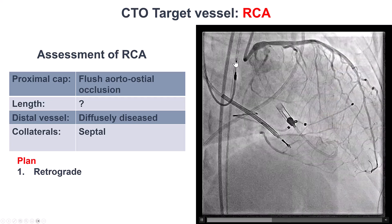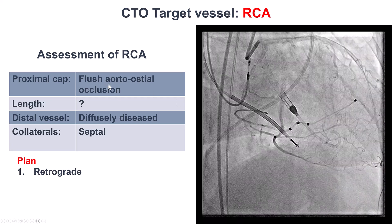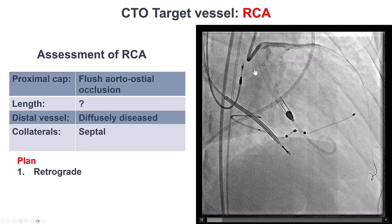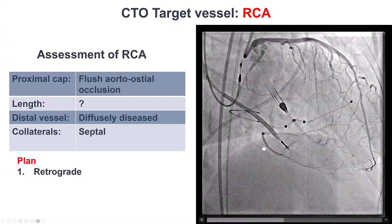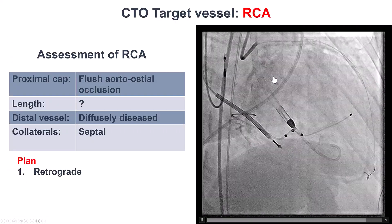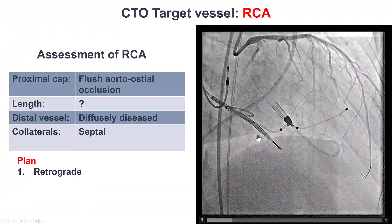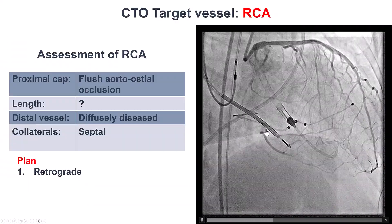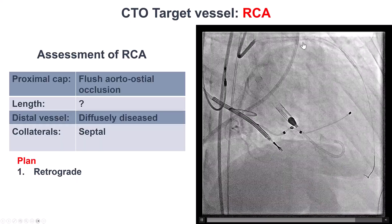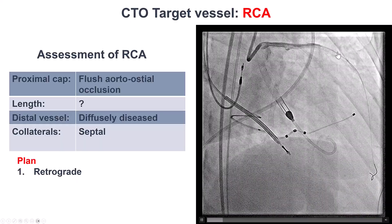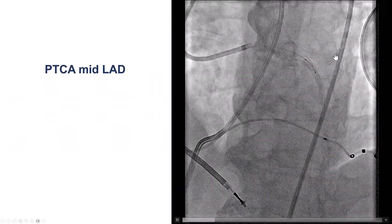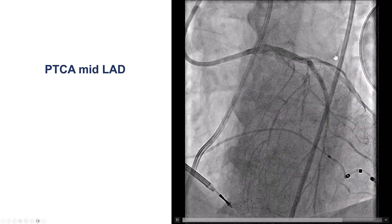What we have here is an aortoostial CTO of the right coronary artery. The length is unclear, but it's probably not too long because we do see filling of the right coronary artery all the way back to the proximal. The distal vessel has some diffuse disease, but overall it's not too bad, and there are septal collaterals filling from the LAD. The LAD itself had previous stents. Because of that, we had to go on a primary retrograde approach given the ostial occlusion.